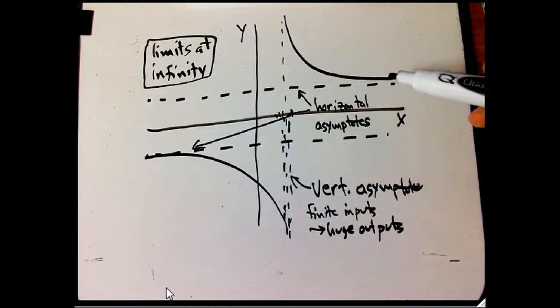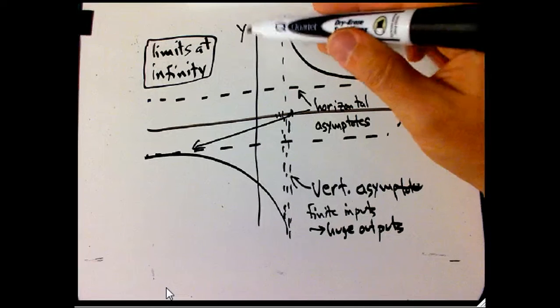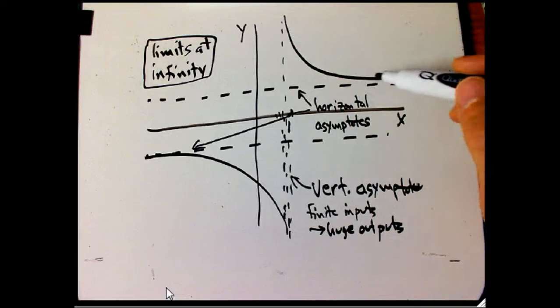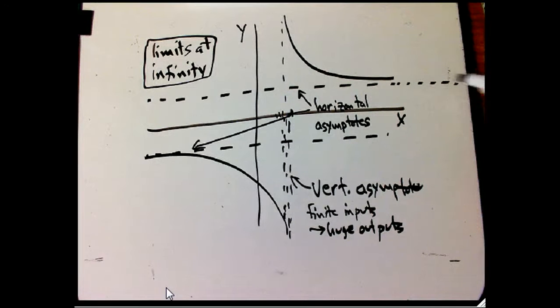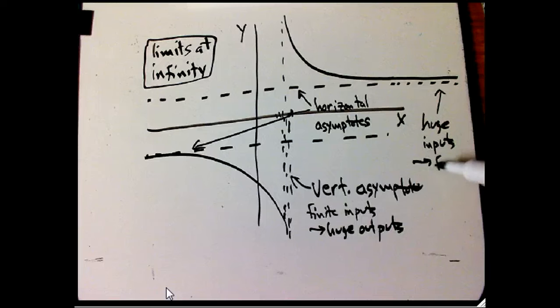With horizontal asymptotes, this situation is reversed, because x is horizontal, that's input, y is vertical, that's output for a function. Here the situation is we're going way, way off. We're putting in really, really large x's. So we're putting in huge inputs and we're getting some nice, sort of stable, finite, manageable output.